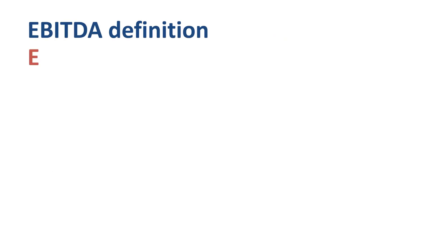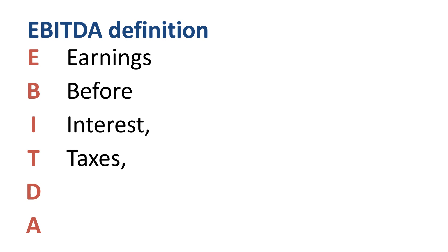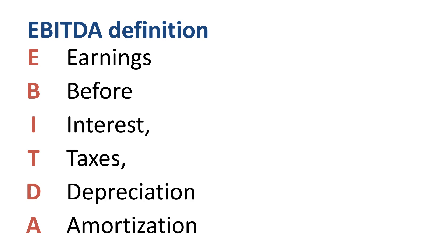If you understand the definition of EBITDA, you automatically understand EBT, EBIT, and EBIT-A. EBITDA is earnings before interest, taxes, depreciation, and amortization. Earnings is the same as income or profit. The word 'before' suggests that we are excluding certain items from our operational performance metric.